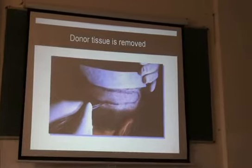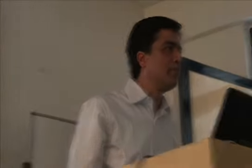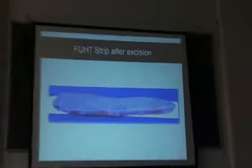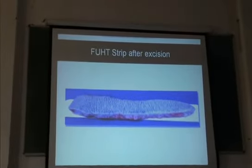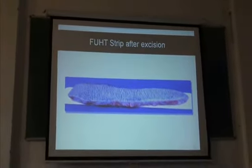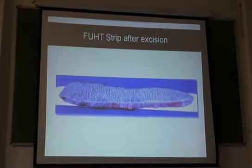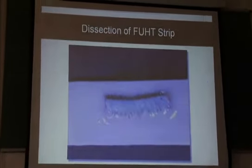We take out a strip and stitch it closed. That strip contains the entire thickness of the scalp, including the root, the bulb, and the subcutaneous fat. You can see individual follicular unit grafts in this strip. This strip is then cut into individual slivers.